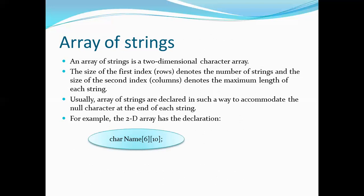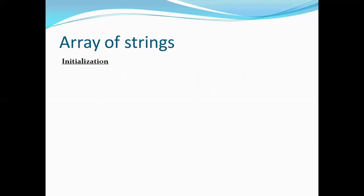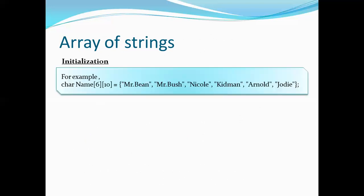For example, the name is 6 by 10. The row distance is 1, 6 by 10. The maximum length is 10. Mr. Bean, Mr. Bush, Nicole, Kid Matt, Arnold, Jody. If you look at six strings, if you look at six characters, you look at 10 maximum length.